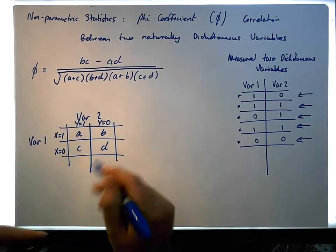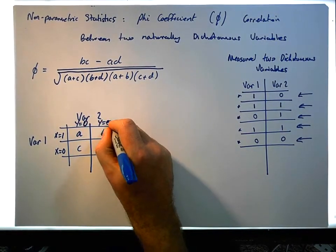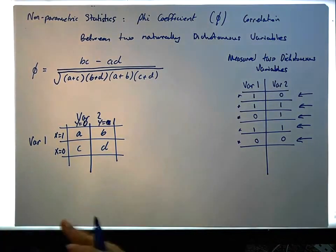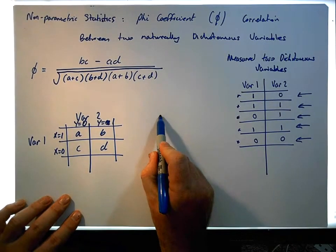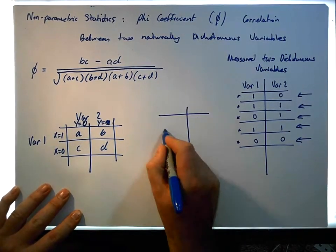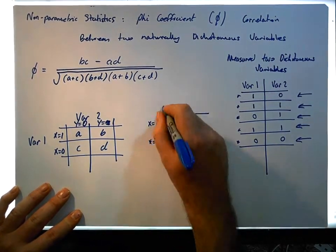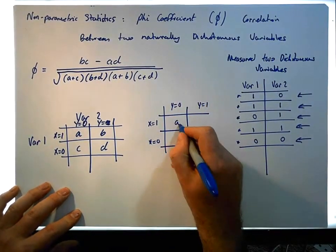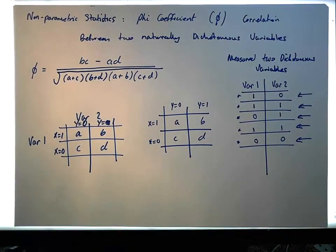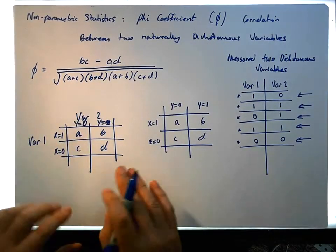Actually, I probably should have labeled these the other way around, but it doesn't really matter because the formula is symmetrical. So to clarify: we have our table with the x variable as one or zero, and the y variable as zero or one, with cells labeled a, b, c, and d. What we want to do is calculate the phi coefficient for a particular example.